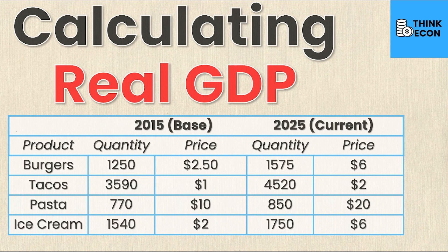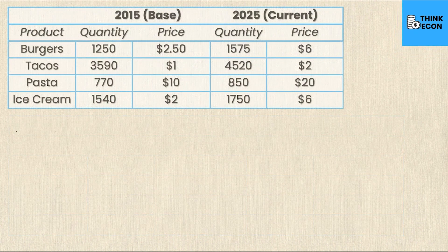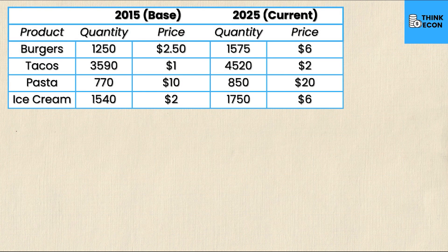When you're calculating real GDP you need to be mindful of two different years: the base year and the year you're trying to calculate for. In this example, 2015 is the base year and the current year is 2025. We have four products — burgers, tacos, pasta, and ice cream — with quantities and prices corresponding to both the base year and the current year.